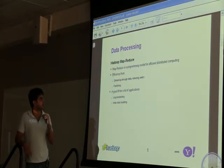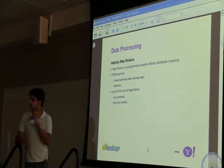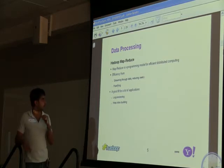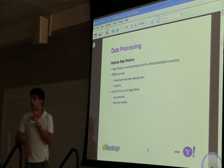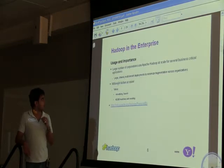MapReduce is a programming model for efficient parallel programming. Its efficiency stems from the fact that you do streaming reads and not random seeks — you do streaming reads on the data, you don't seek to particular records. There's also the pipeline. It's a good fit for a lot of applications and a lot of processing. In fact, a lot of our team actually came from YST — Yahoo Search Technology — and that's where a lot of it was used initially.